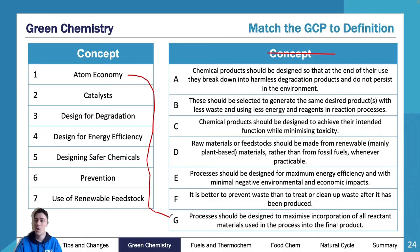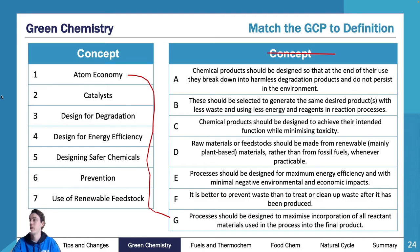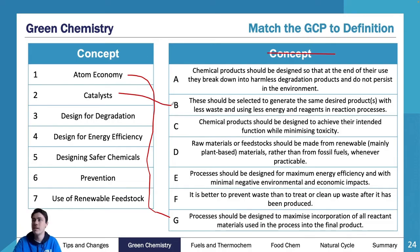Two — catalysts. Remember that catalysts provide an alternative reaction pathway and use essentially less energy to get the desired product. Reading through: 'These should be selected to generate the same desired product with less waste and less energy and reagents in the reaction process.' That is a perfect definition of a catalyst — so two is B.